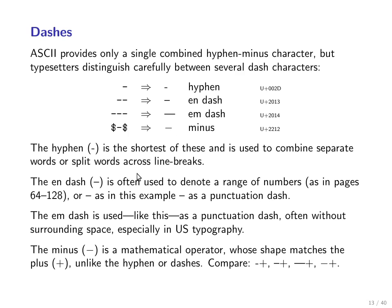The N-dash is used particularly in British typography as a replacement for either the word 'to' or the word 'and.' So if you have a range of numbers — pages 64 to 128 — it's customary to use an N-dash rather than a hyphen. Also, if you have two names joined together, like the Paris–Dakar rally or the London–Paris train, the dash is a shortcut for 'and' and you would use an N-dash there. The M-dash is an even longer version, rarely used in British typography, but it can be used as a punctuation dash for an interjection in the middle of a sentence. In British typography you would use a space, an N-dash, and a space as a punctuation dash.